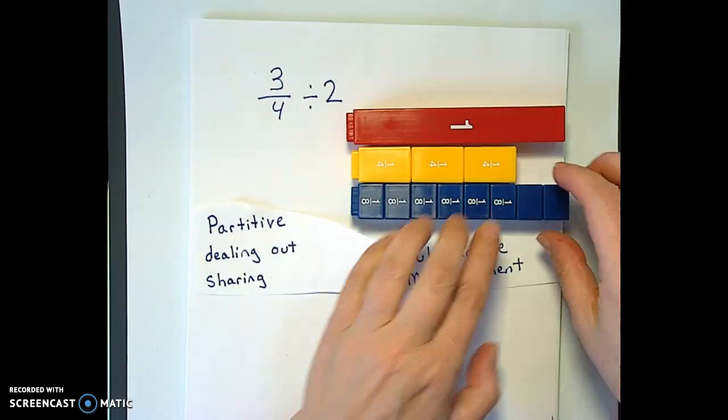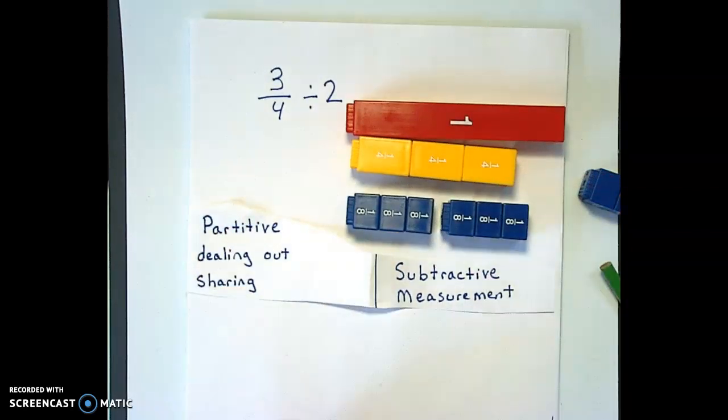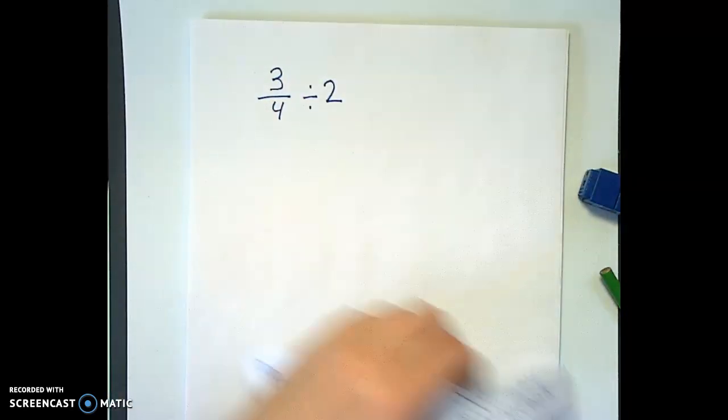So we've got our 6 eighths and we want to break that in half and that is a whole lot easier than breaking 3 quarters in half. So let me now draw a picture of that.